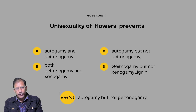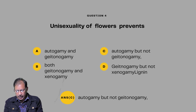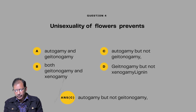Question number four: Unisexuality of flowers prevents what? Options are: autogamy and geitonogamy; both geitonogamy and xenogamy; autogamy but not geitonogamy; and geitonogamy but not xenogamy. Answer will be autogamy but not geitonogamy — autogamy will be prevented in a unisexual flower.